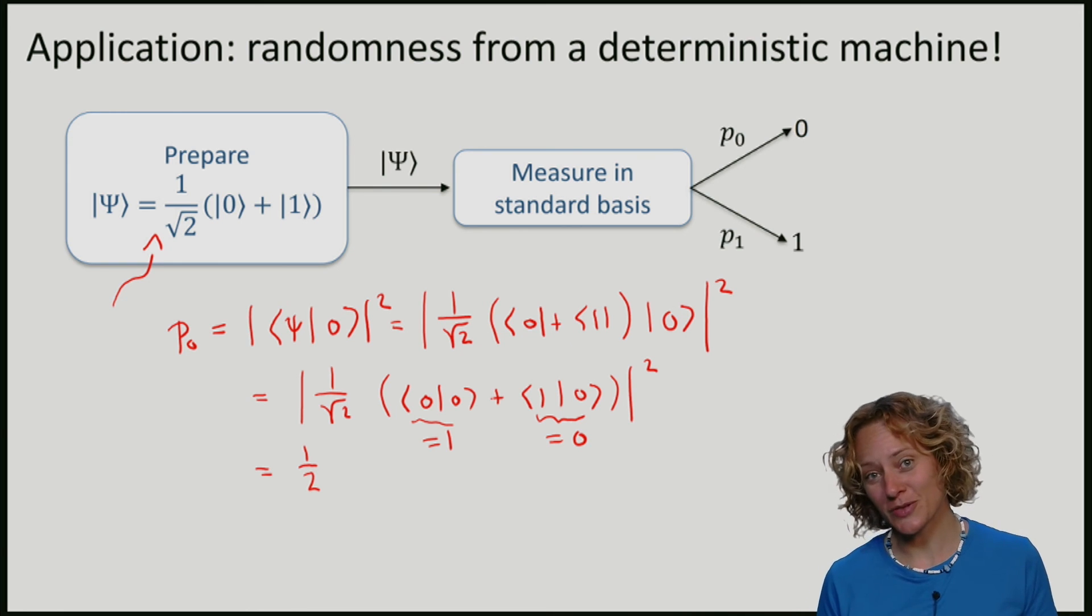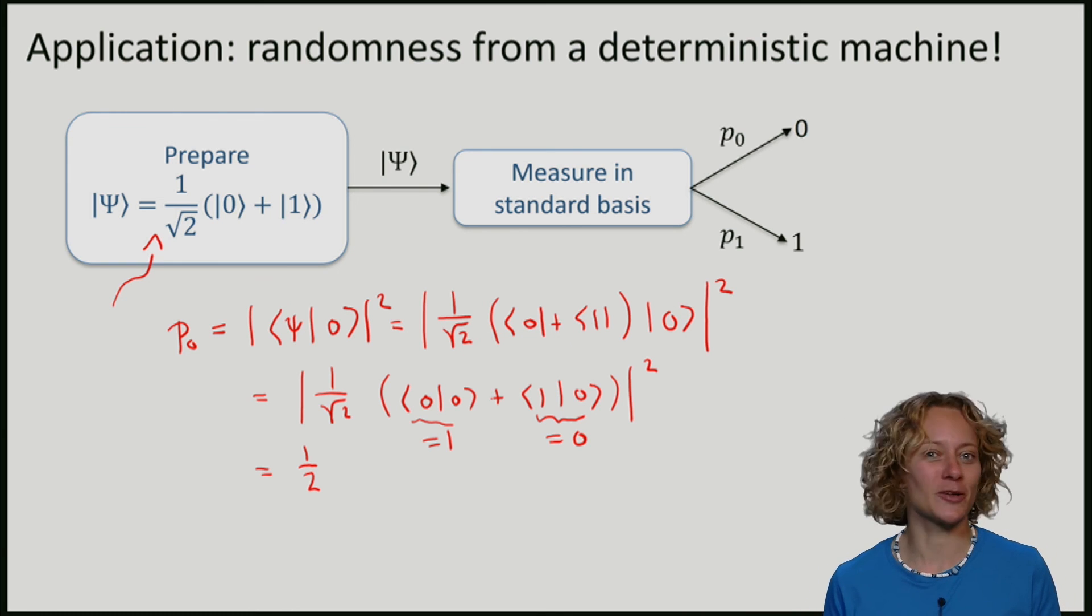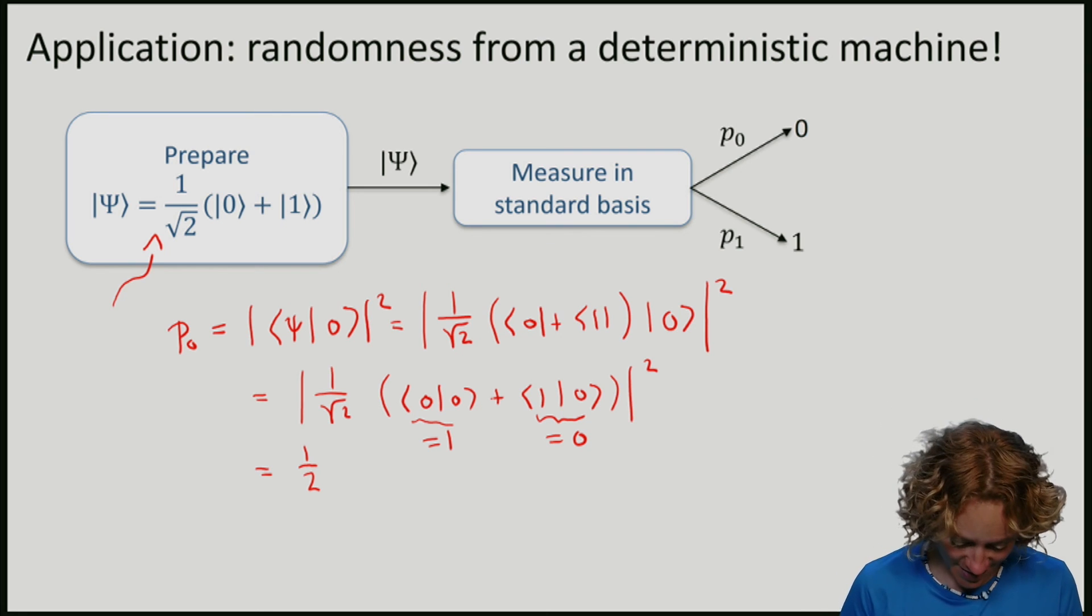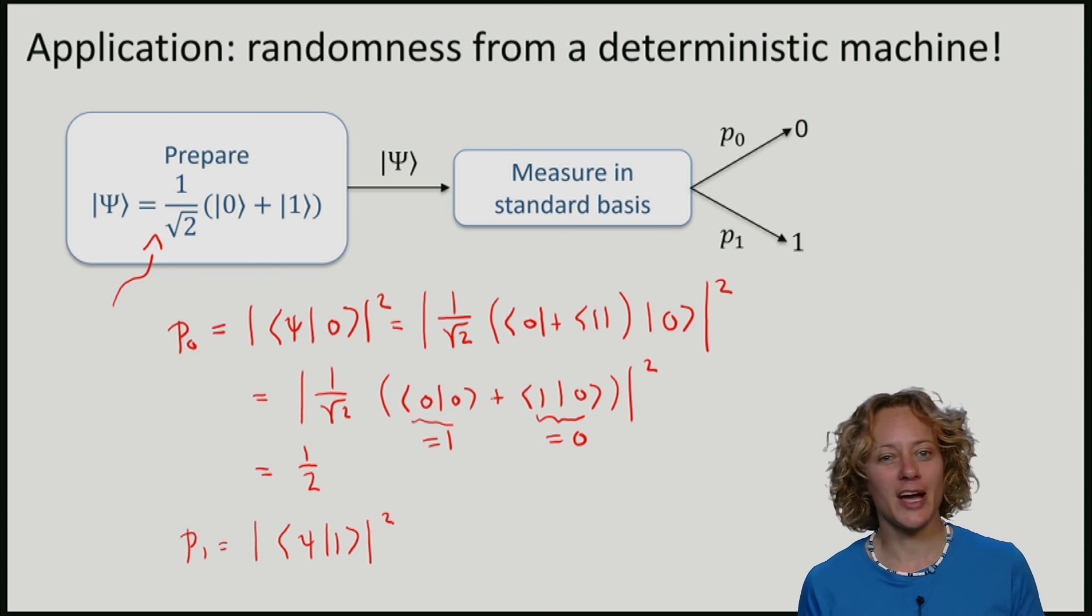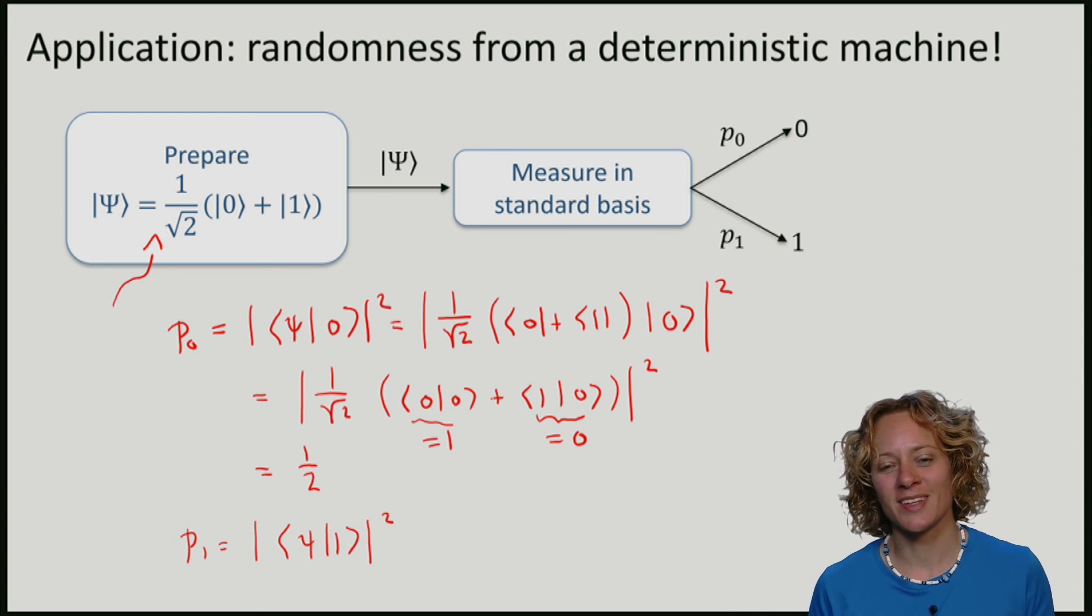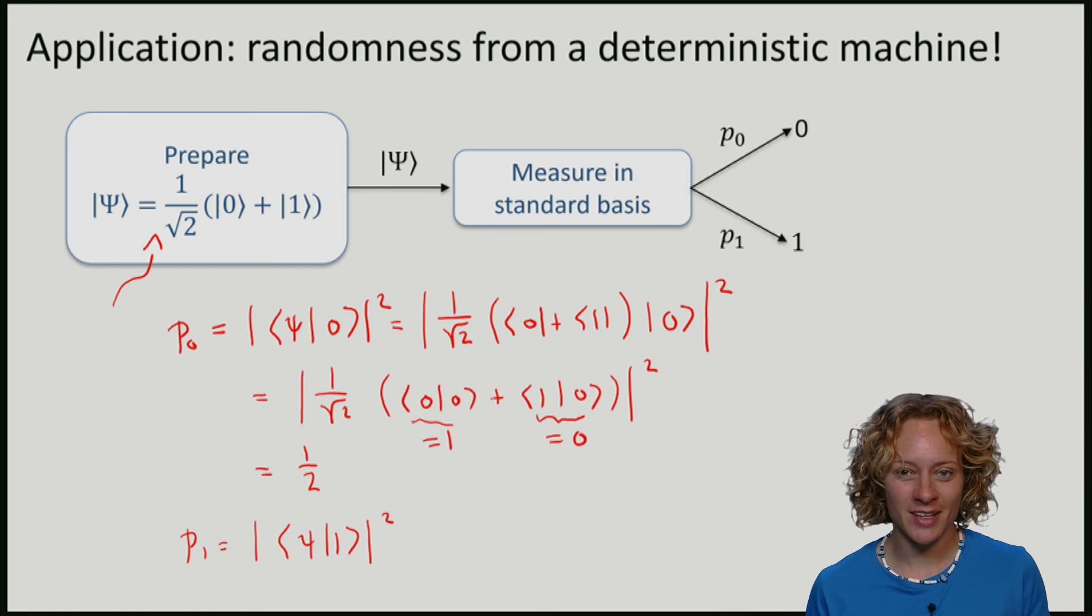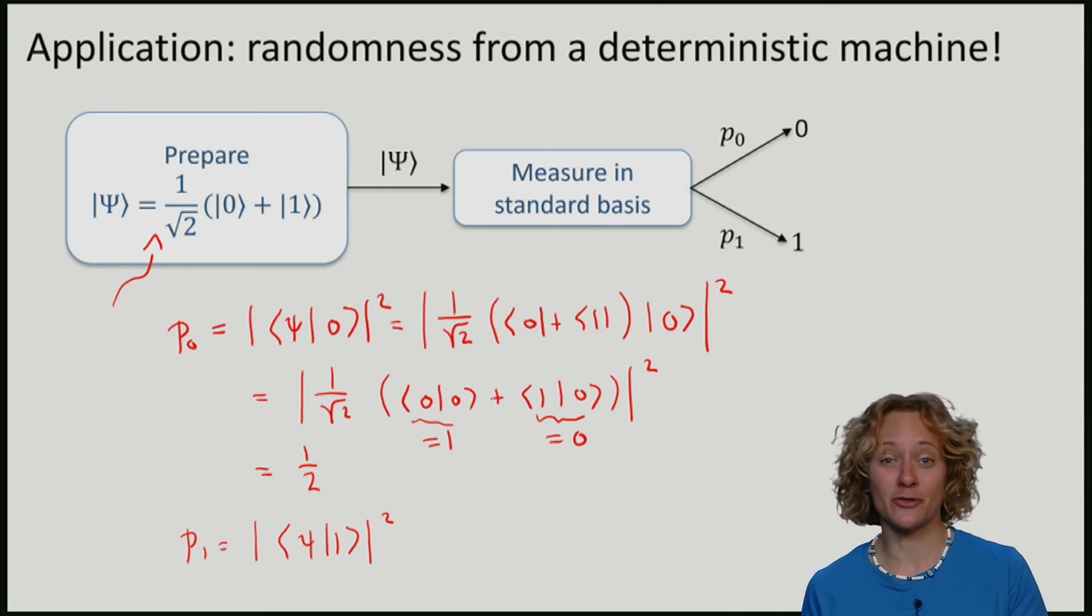We can of course also compute the probability that the outcome is 1, which is the inner product between psi and 1. I am not going to do this computation, but you should check that this is also half as we would expect because the probabilities should add up to 1.